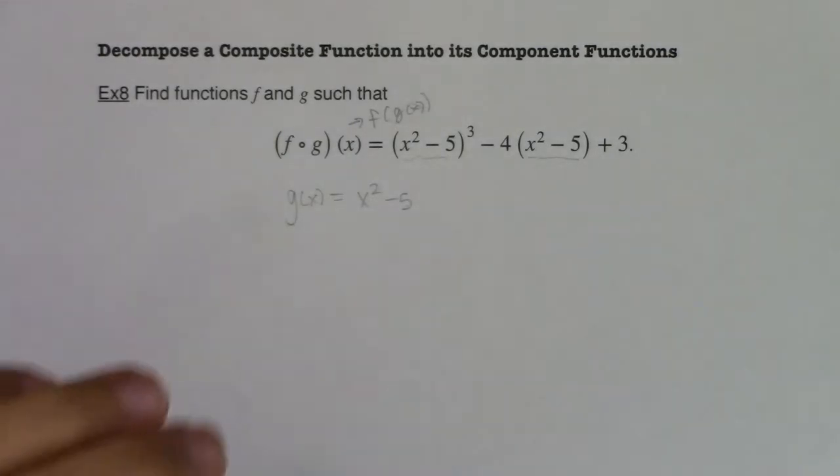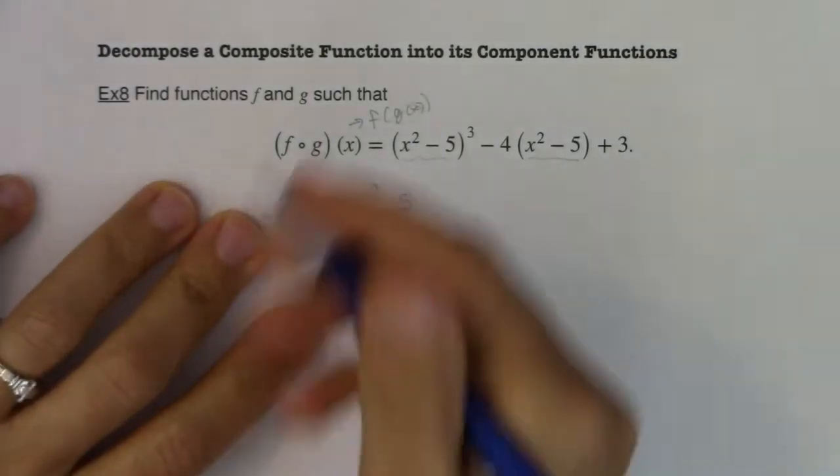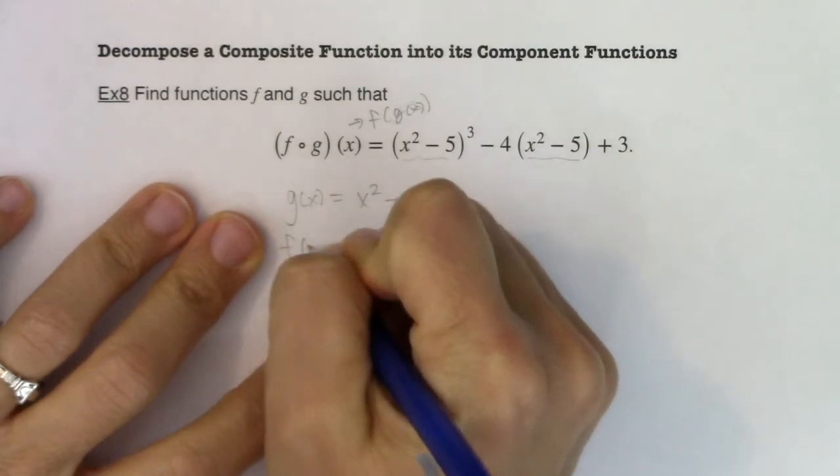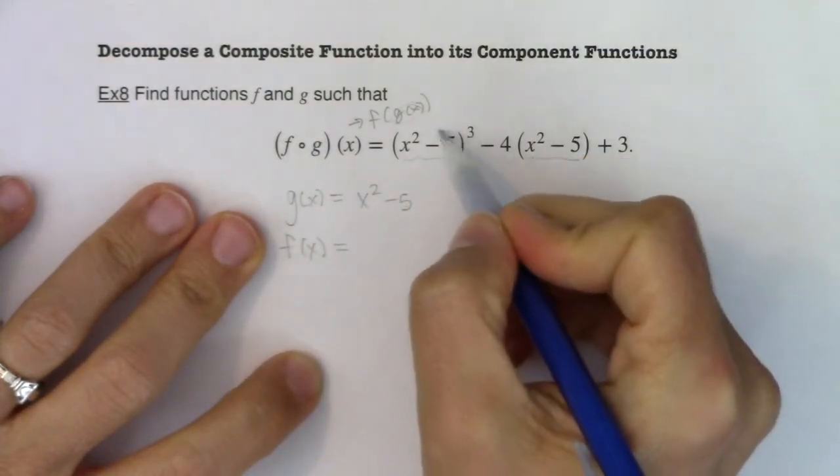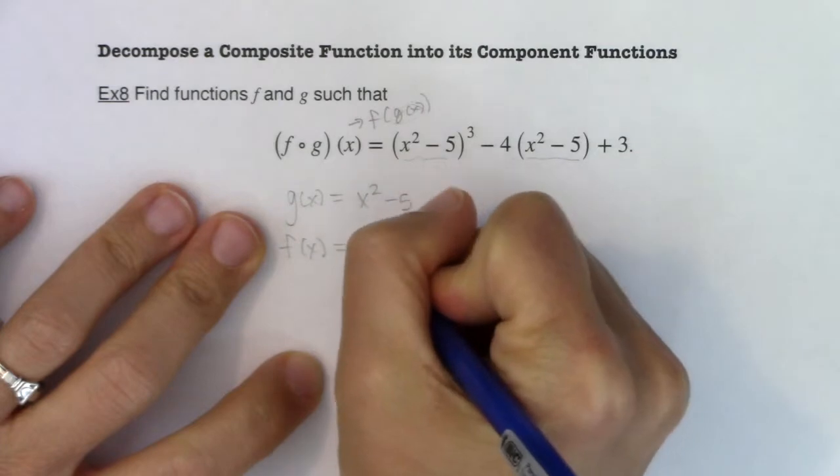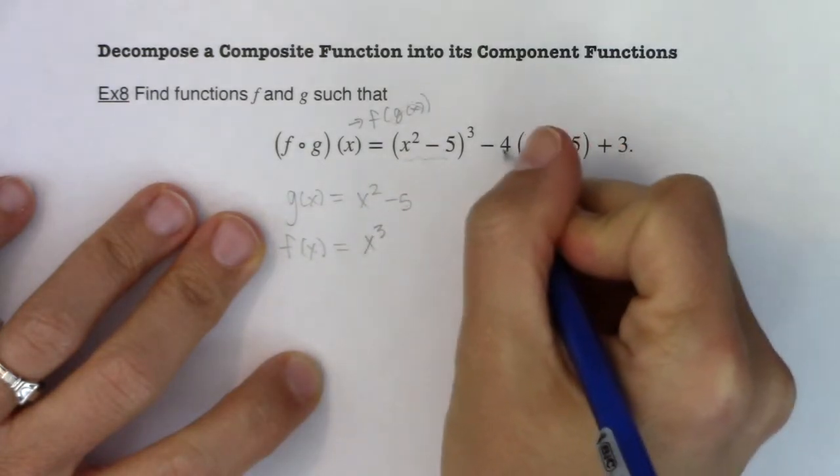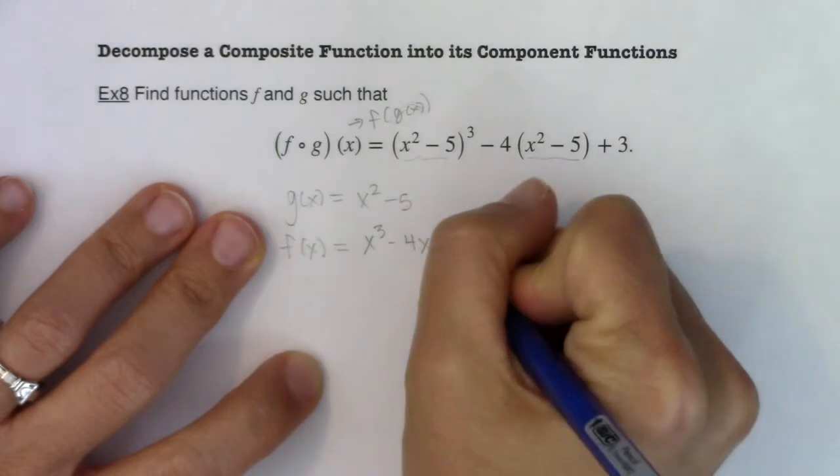All right, so with that, let's try and figure out what the f function is. So f, in this case, my guess is it is this quantity cubed, so I'm going to say x cubed, and then minus four of those things plus three.